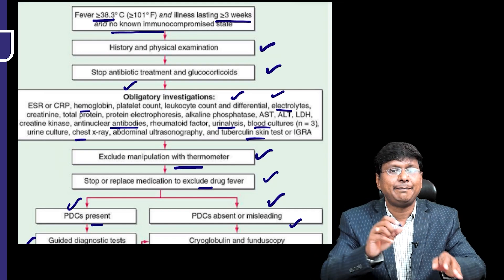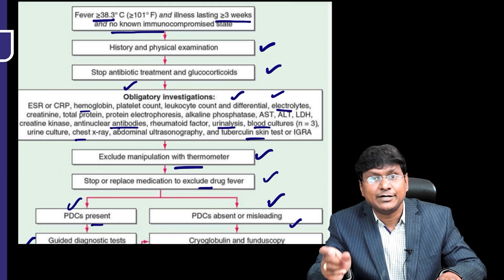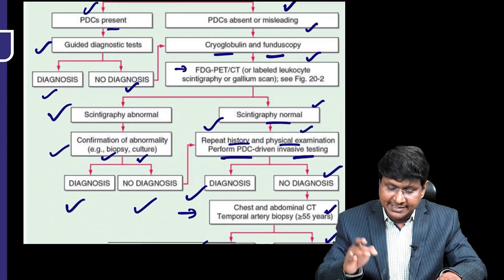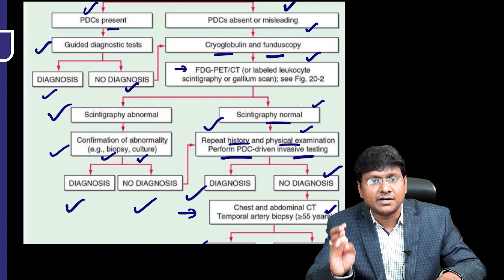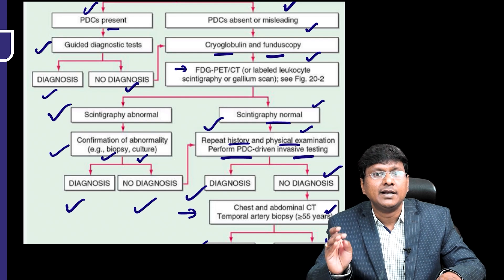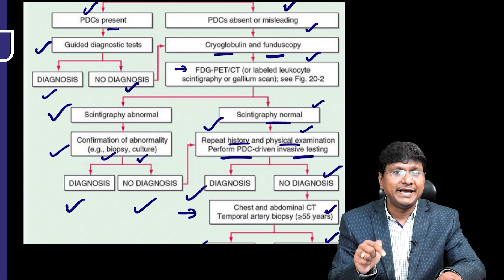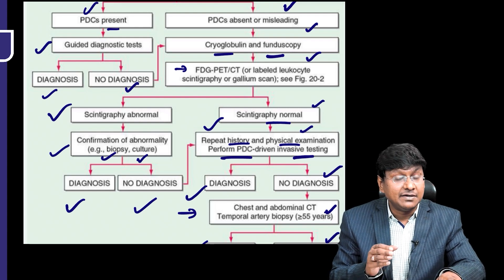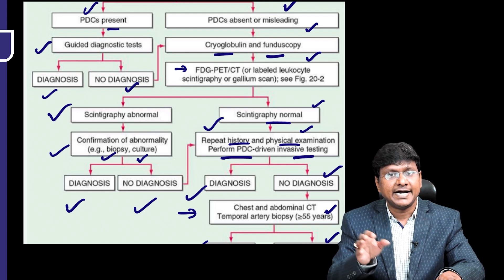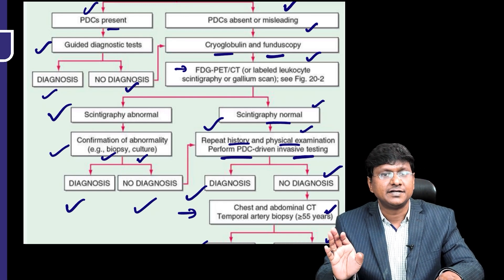Extract pathological diagnostic clues. If PDCs are present, perform guided diagnostic tests that will lead to diagnosis or no diagnosis. If PDCs are absent or misleading, additional tests are needed — check for cryoglobulimia and perform fundoscopy. If you are not getting a diagnosis, perform FDG PET CT, labelled leukocyte scintigraphy, or a gallium scan. Then advanced imaging and biopsy based on the finding: if scintigraphy is abnormal, perform biopsy or culture of the identified abnormality. If diagnosis is confirmed, treat accordingly. If no diagnosis is reached, continue further investigations.